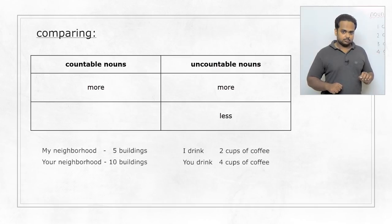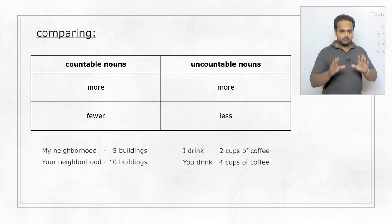But back to our first example, we said there are more buildings in your neighbourhood. That means in my neighbourhood, there are fewer buildings. This is where a lot of people go wrong. People say there are less buildings in my neighbourhood. That is grammatically incorrect because with countable nouns, you cannot use less, you have to use fewer to compare. So remember these rules and remember not to make the common mistakes that we discussed here.